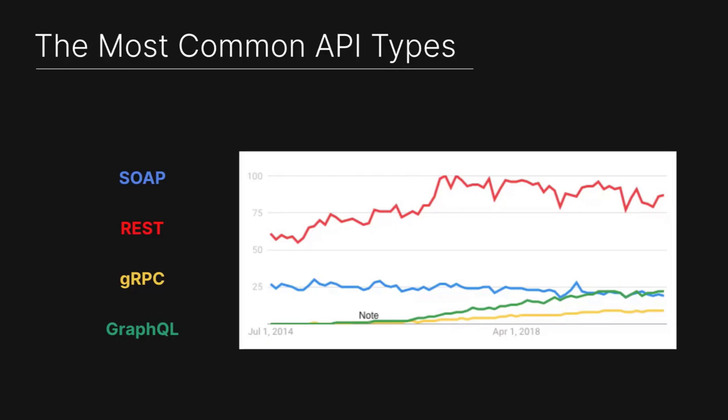Coming into prominence are GraphQL and gRPC. gRPC is a little bit lower than GraphQL, but GraphQL is certainly on the rise quite a bit. I'd really like to do a much later session on GraphQL because it's interesting technology and it's not really well understood from a security perspective.